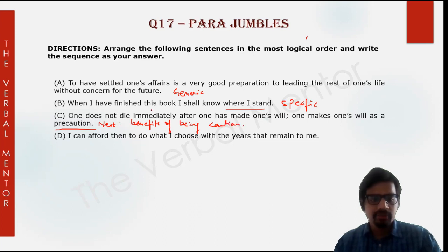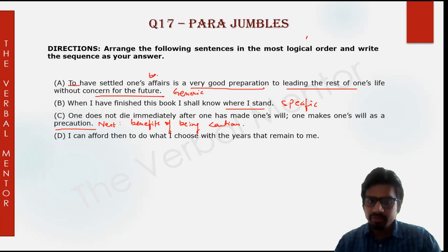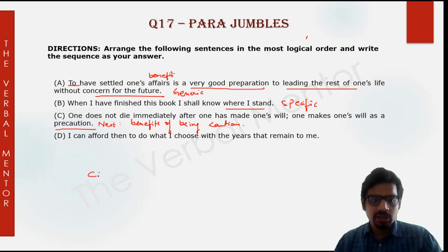Being proactive — sentence A does that: 'To have settled one's affairs is a very good preparation to leading the rest of one's life without concern for the future.' So this is the benefit of being cautious, being proactive. Therefore C and A form a concrete pair.